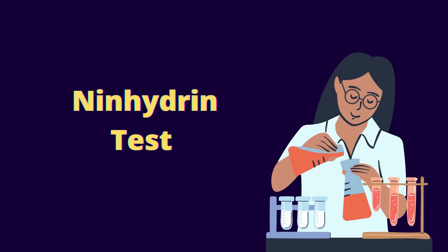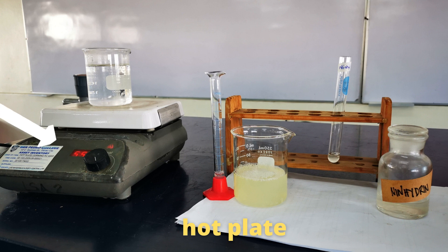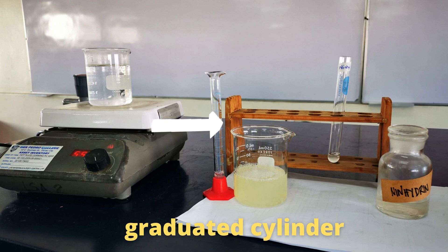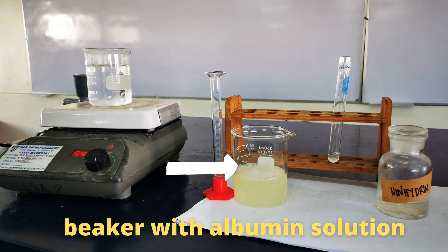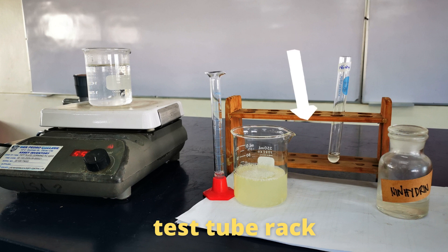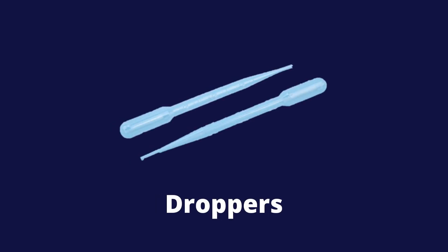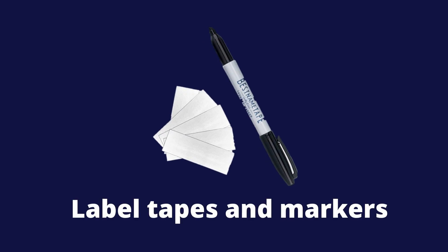Next, we have the ninhydrin test. These are the materials and reagents for ninhydrin test: hot plate, graduated cylinder, beaker with albumin solution, test tube, test tube rack, ninhydrin solution, droppers, label tapes, and markers.